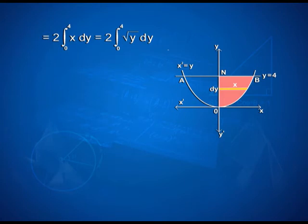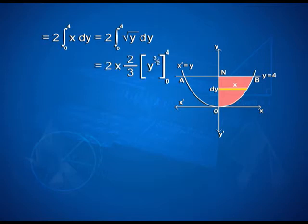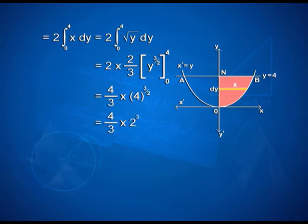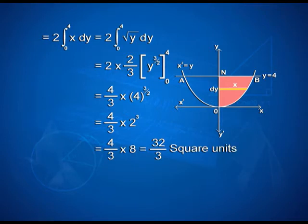Therefore, 2 × integral from 0 to 4 of x dy = 2 × integral from 0 to 4 of √y dy = 2 · (2/3) · [y^(3/2)] from 0 to 4. On applying limits, we have (4/3) · 4^(3/2) = (4/3) · 2³ = (4/3) · 8 = 32/3. Here, we have taken horizontal strips as indicated in the figure to calculate the area.